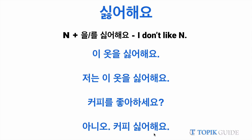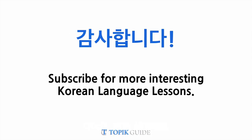Technically, if you use shiroyo you should say 'koppi ga shiroyo,' and if you want to say shiroheyo you should say 'koppi rul shiroheyo.' I hope you understand the grammatical difference between shiroyo and shiroheyo, and you'll be able to use them correctly. Thank you, and see you in the next lesson.